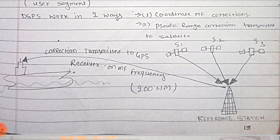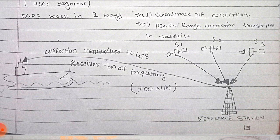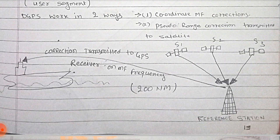In the diagram, there is a reference station. We assume this is a DGPS reference station having three satellites. By knowing the position of the reference station, it calculates the error of each satellite, and then the DGPS reference station sends this correction to GPS on board. This is possible when the receiver is on MF frequency, that is range is 200 nautical miles.